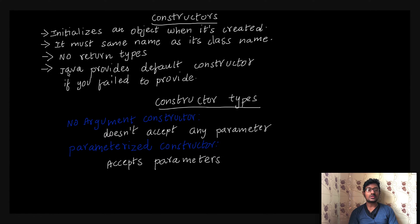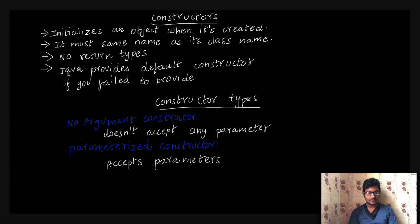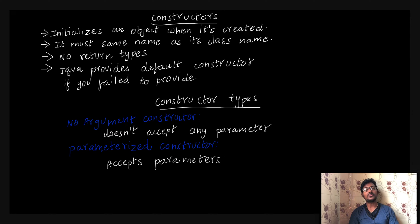Fourth point is: Java provides a default constructor if you fail to provide one. So if you fail to provide a constructor, Java creates a default constructor. We know that if we compile it, it will automatically be created.